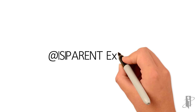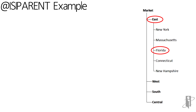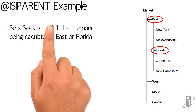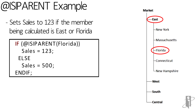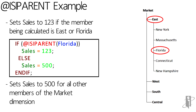If we wanted to also check for the member Florida itself, we could instead use isIParent. So we say if @isIParent Florida, sales equals 123, otherwise sales equals 500. isIParent Florida will return true if we're calculating either Florida or Florida's parent, which in this case is East.